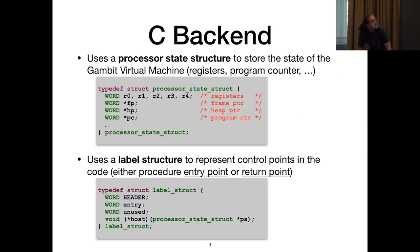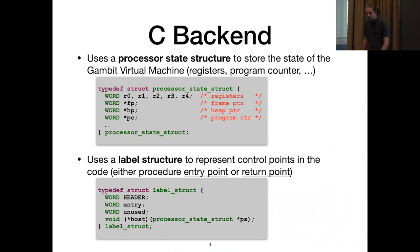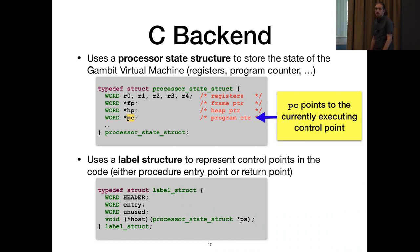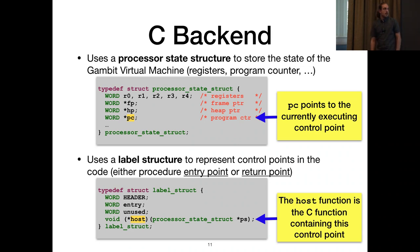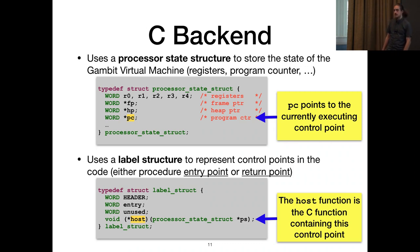Here's how the C back-end works. The GVM has some registers stored inside the processor state. There's also a frame pointer, a heap pointer, and a program counter. The program counter points to the currently executing control point, which is a procedure or a continuation, and this field is used by the trampoline. The C back-end also generates label structures used to represent the control points. There's a header, like all memory-allocated objects, and a host field that contains the address of the C function that contains the code for that control point.